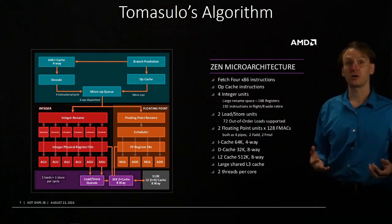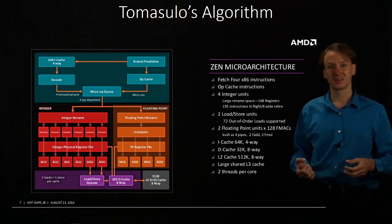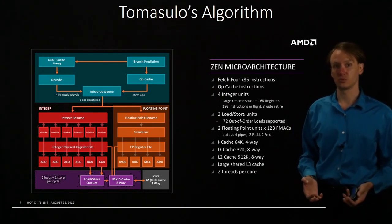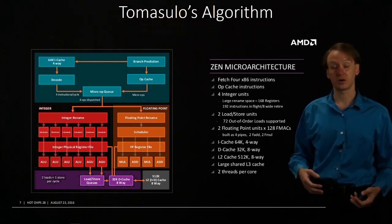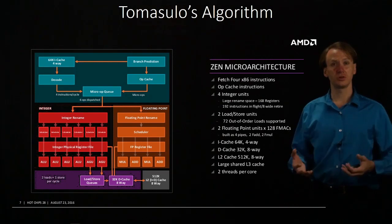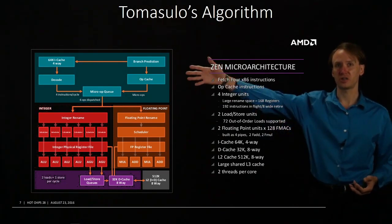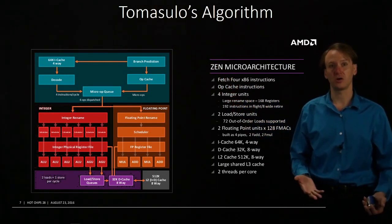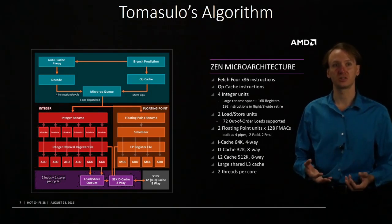Tomasulo's algorithm is really still used today. It's a great way of partitioning our hardware to get a lot of use out of it and to achieve really good performance. There's a lot more to keep track of than in a single-stage architecture or a five-stage pipeline, but we're still using a lot of the same elements — instruction fetch, instruction decode, instruction commit hardware — we've just changed how we process those instructions in between.